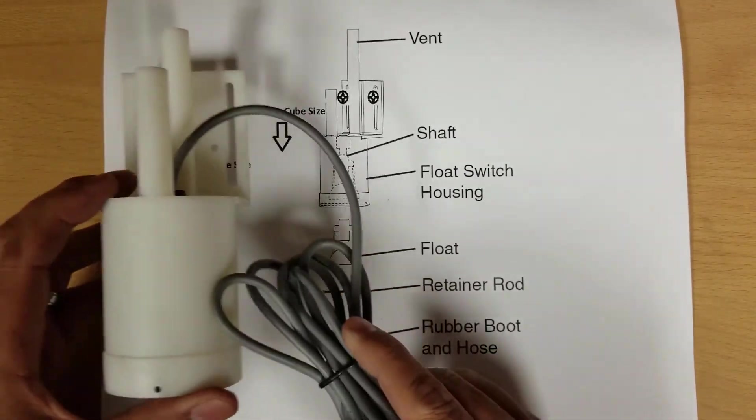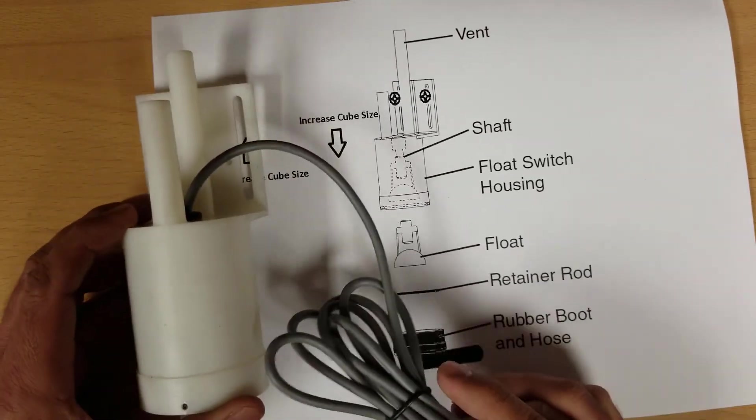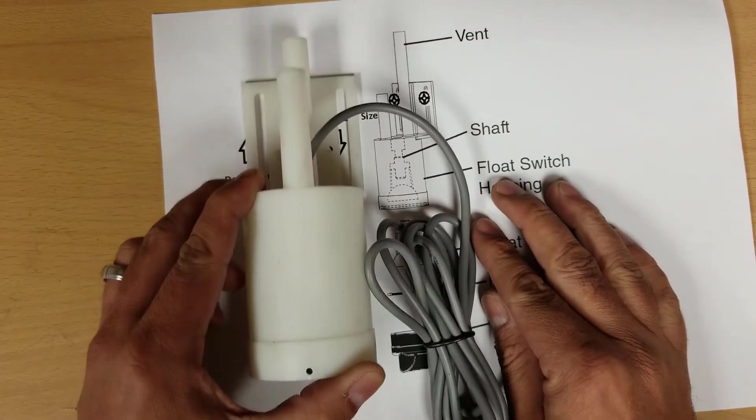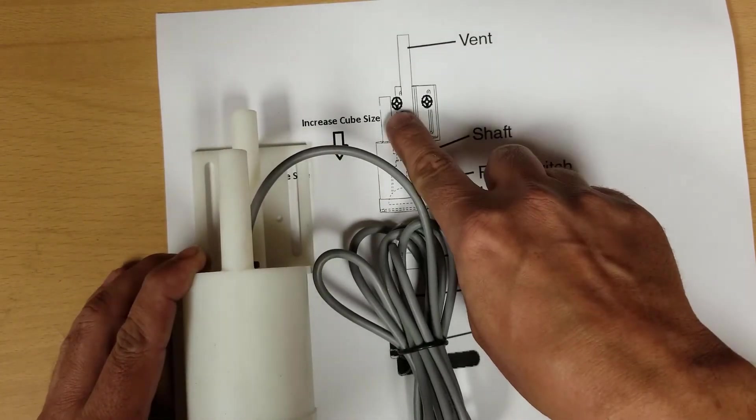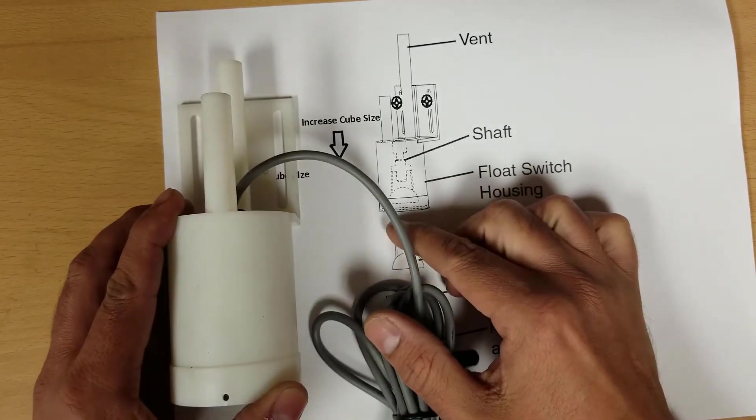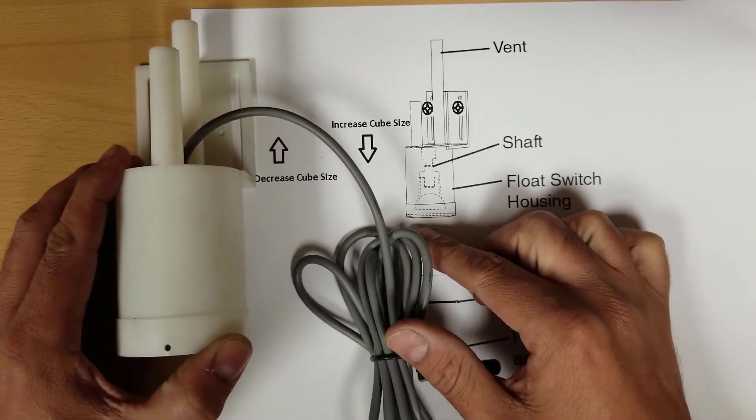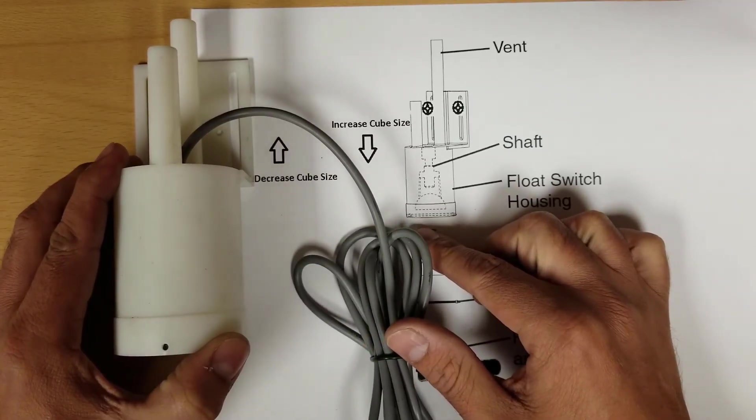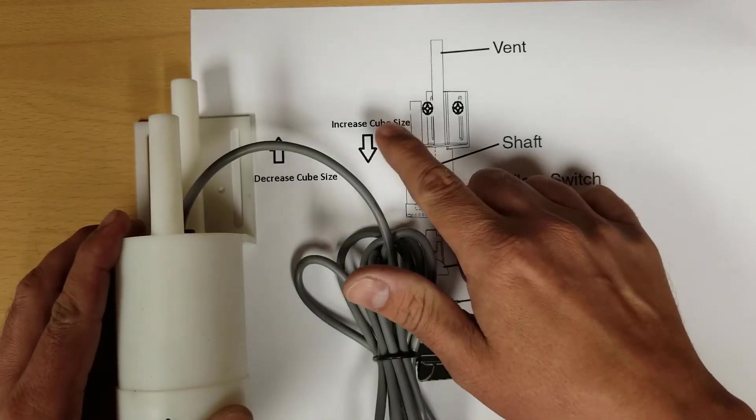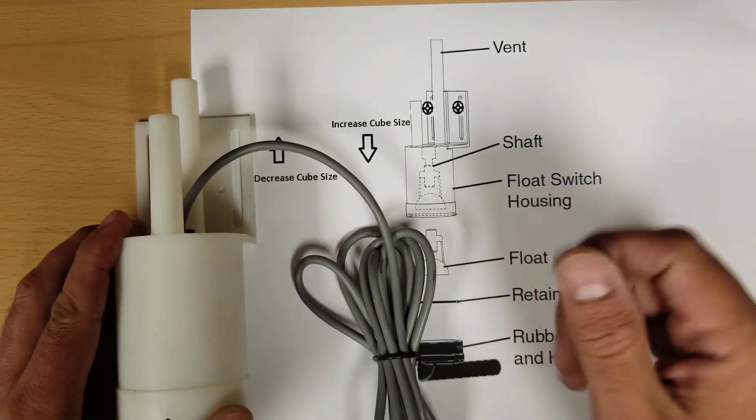You can adjust this float either up or down. There's two screws that you'll loosen up and you can either slide it up and by sliding it up you're going to decrease the cube size. If you slide it down you're going to increase the cube size, the cube thickness.